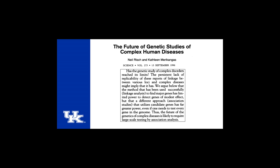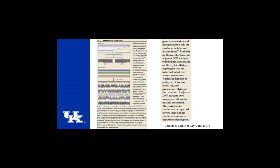Moving from linkage to association — a page and a half paper in Science from 1996 by Risch and Merikangas: 'Has the genetic study of complex disorders reached its limits?' They argue that linkage may be insufficient, and that the future of genetics of complex diseases is likely to require large-scale testing by association analysis. It's fascinating that 21 years ago this came out. I'll use this slide to jump from linkage to association.